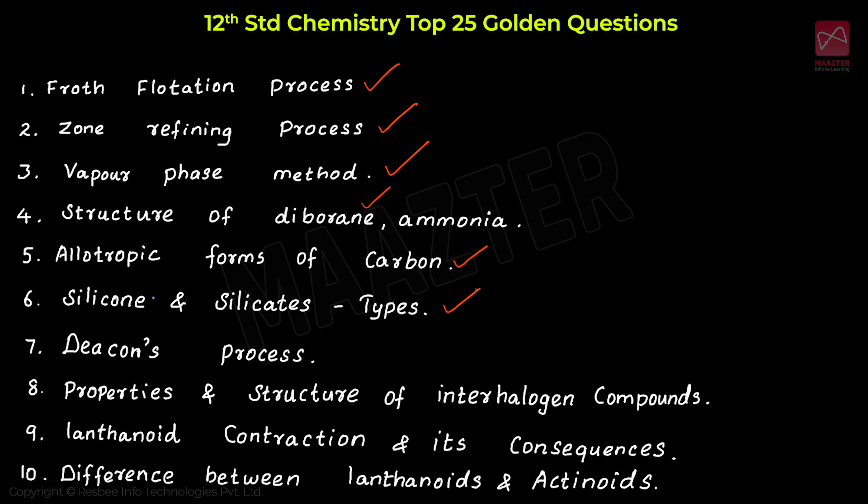Then Unit 3 important questions: structure of ammonia, then the Dacon process, and properties and structure of inter-halogen compounds. These are the key questions from Unit 3.